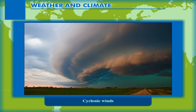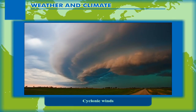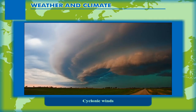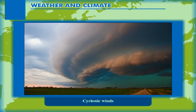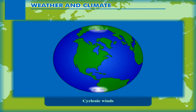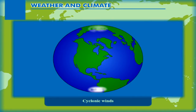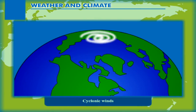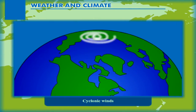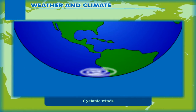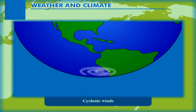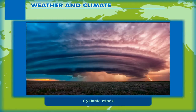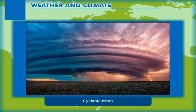Cyclonic winds are irregular winds of shorter duration. They are caused by pressure systems called cyclones and anti-cyclones. A cyclone is an intense vortex or a whirl in the atmosphere with winds circulating around it in an anti-clockwise direction in the northern hemisphere and clockwise direction in the southern hemisphere. The center of a cyclone is a low pressure area with steep barometric gradient.